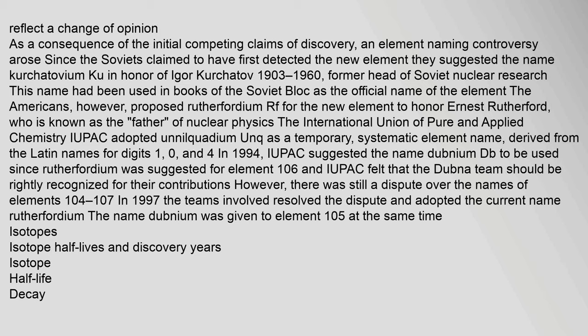An element naming controversy arose since the Soviets claimed to have first detected the new element. They suggested the name Kurchatovium (Ku) in honor of Igor Kurchatov (1903–1960), former head of Soviet nuclear research. This name had been used in books of the Soviet bloc as the official name of the element. The Americans, however, proposed Rutherfordium (Rf) for the new element to honor Ernest Rutherford, who is known as the father of nuclear physics. The International Union of Pure and Applied Chemistry (IUPAC) adopted Unnilquadium (Unq) as a temporary, systematic element name, derived from the Latin names for digits 1, 0, and 4.